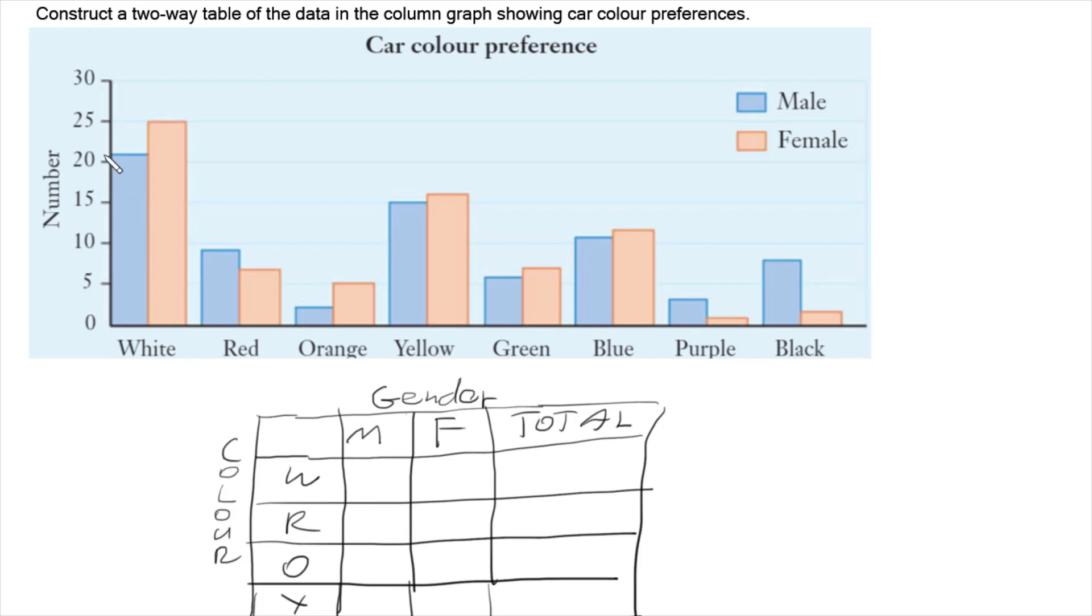So for white we've got 21 males and 25 females, so that gives us a total of 46. For red we've got 9 males and 7 females, so total of 16. Orange we've got 2 males, 5 females, so a total of 7.